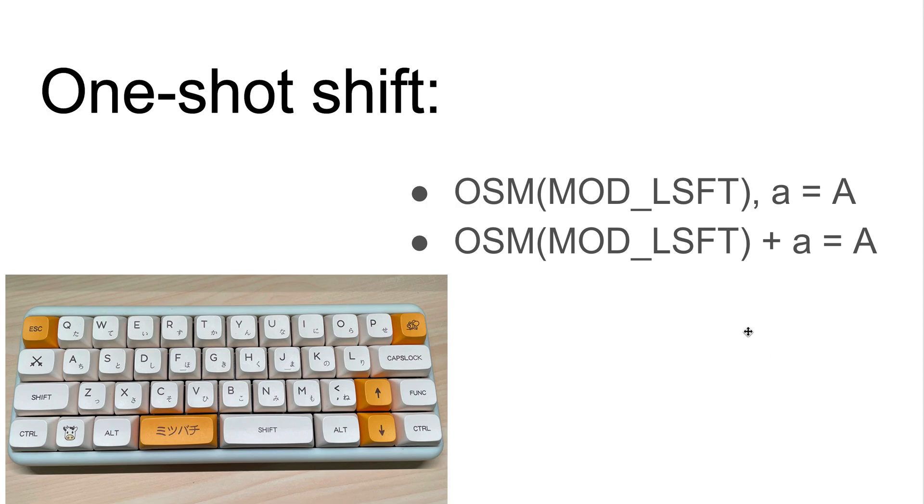The last trick is called the one-shot shift. You already saw something like this before in the previous slide. So suppose you define one key to have this code. When you tap it once and release, and you tap another key, that key will become capitalized. But if you just hold this one and then tap that key at the same time, it will also be capitalized. It's like you can use the shift key in two different modes. Either you hold it or you tap it, and then the next one becomes shifted.